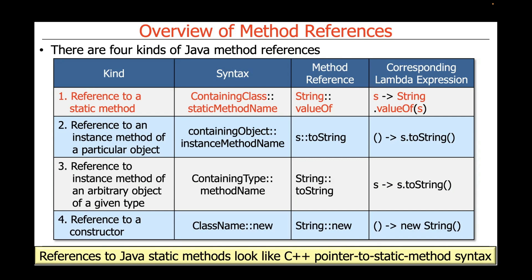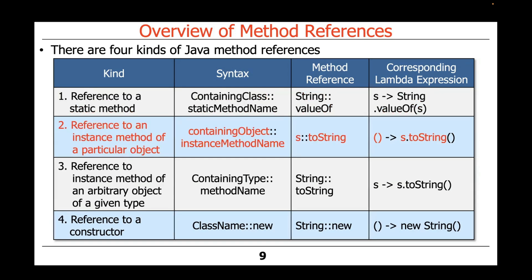You can see the Lambda expression is s, which is the object, and then string dot valueOf s, which is more verbose. For my money, references to Java static methods look an awful lot like C++ pointer to static method syntax.